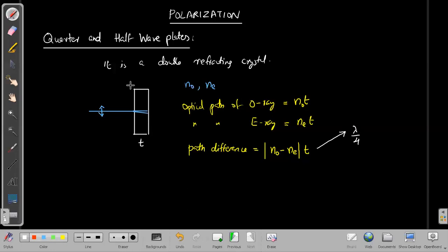then this double refracting crystal is called a quarter wave plate. When the path difference between the ordinary and extraordinary ray is a quarter of the wavelength, it is called a quarter wave plate.